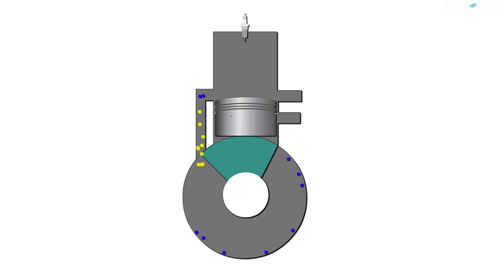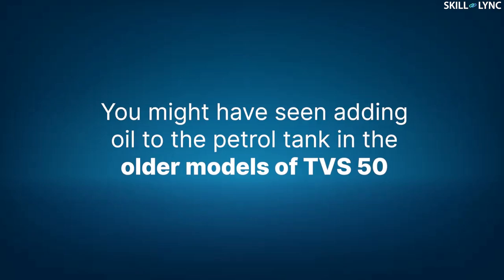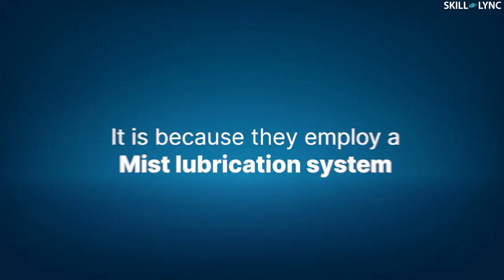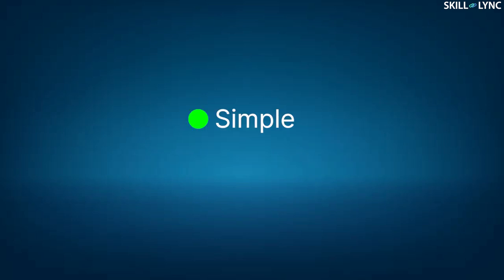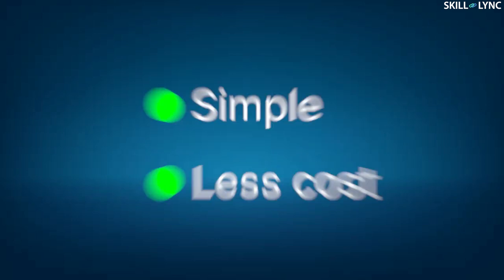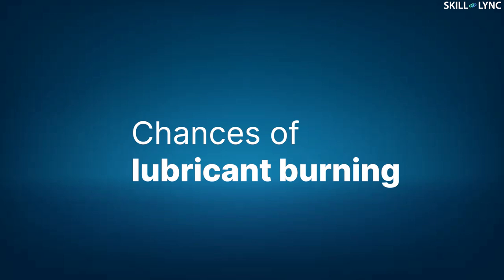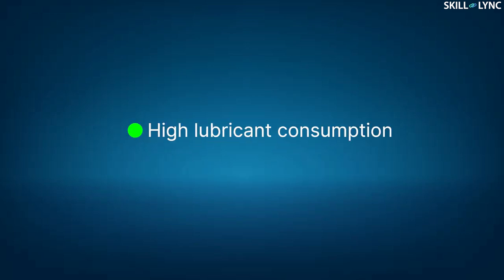Some oil moves along with the fuel inside the engine cylinder and lubricates the piston and the cylinder. You might have seen people adding oil to the petrol tank in the older models of TVS 50 — it is because they employ a mist lubrication system. This type is simple and of less cost, but there is a chance of oil burning inside the engine, resulting in high lubricant consumption.